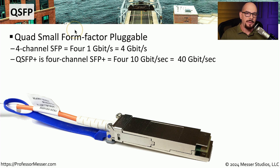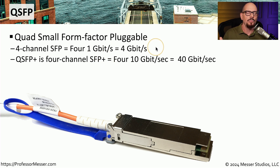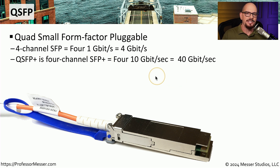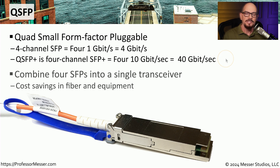A Quad Small Form Factor Pluggable, or QSFP, consists of four channels of SFP. So if one SFP is a one gigabit per second connection, a Quad SFP would be compatible with a four gigabit throughput. The same applies for the SFP+: a Quad SFP+ is a four-channel SFP+. Since it's common to see a 10 gigabit connection on a single SFP+, a Quad SFP+ can support four of those for a total throughput of 40 gigabits per second. We can also take a single fiber connection and effectively extend four separate links over that single fiber, providing cost benefits for both equipment and media.